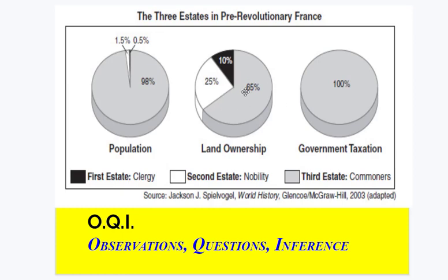You can also see right here the division of land ownership. But I think the thing that hopefully caught your attention most significantly is the concept of government taxation. Looking at this chart, which is from 2003 — so that should trigger that we're looking at a secondary source document — you can see that 100% of the taxation falls on that third state category.